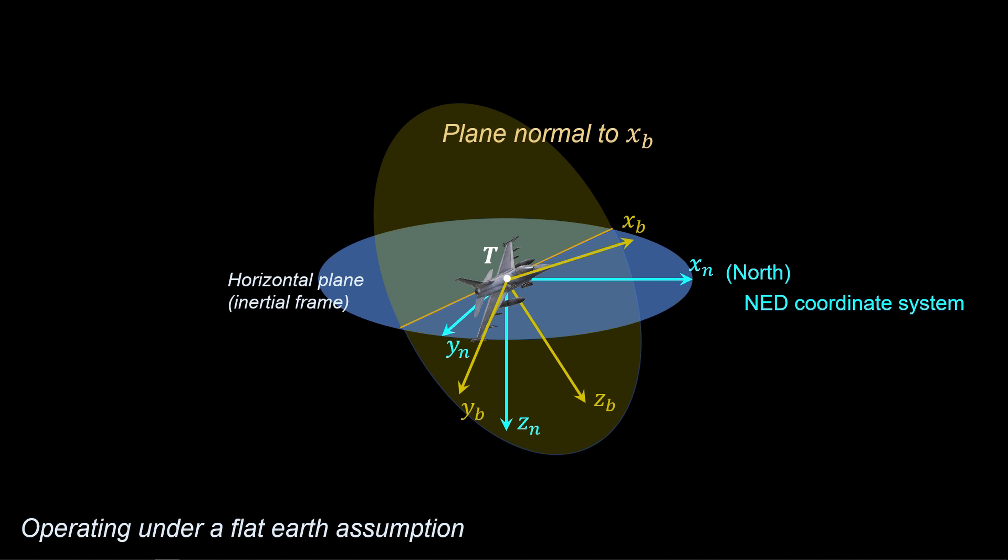Now, how can we quantify the orientation of the body-coordinate system with respect to the northeast-down coordinate system? The answer is through a sequence of rotations. First, project XB to the horizontal plane. Then, we rotate the body-coordinate system about ZN by the yaw angle, psi.